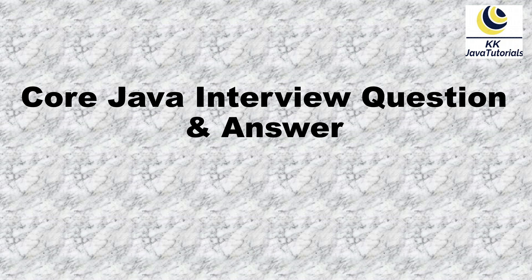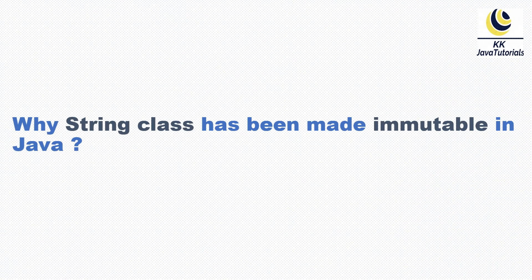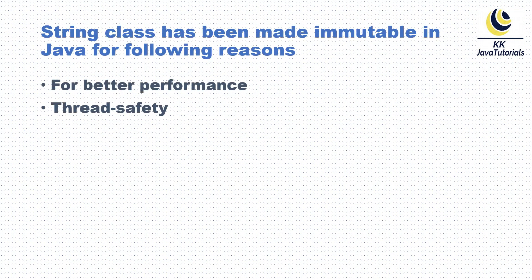Hey guys, welcome to Core Java interview questions and answers. In this video tutorial we are going to talk about one of the very important Java interview questions: why has the String class been made immutable in Java? We'll see what are the basically important reasons. A String class has been made immutable in Java mainly for two reasons — first for better performance, and second for thread safety.